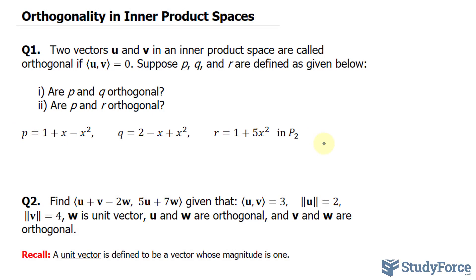Are p and q orthogonal? I will treat these three quadratic equations as vectors. The first vector will be p, and it will have the components 1, 1, and negative 1. q will have the components 2, negative 1, and 1.